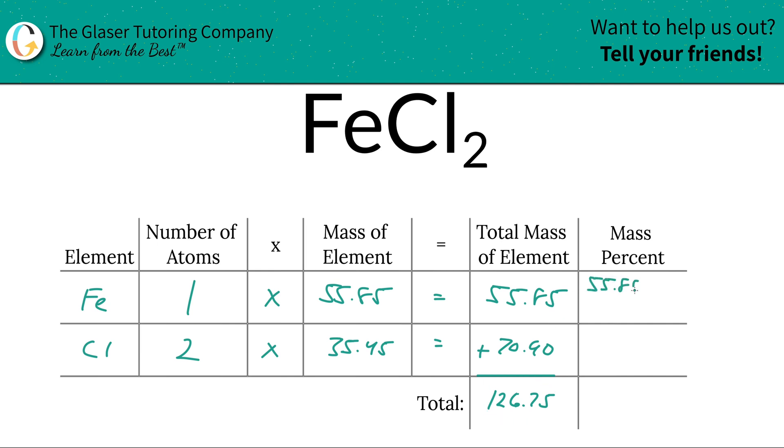So we're going to take the 55.85, divide it by the total of 126.75, and multiply that by 100, and that's going to equal our percent of iron. This works out to be 44.06 percent for iron.